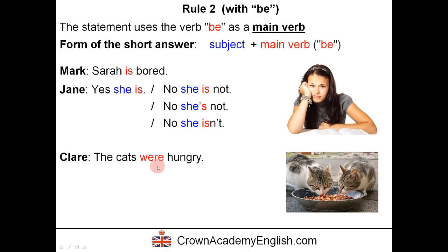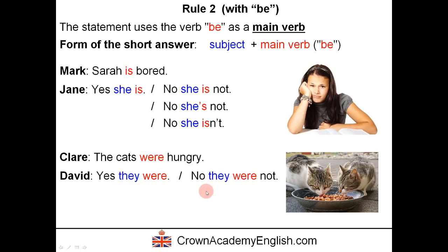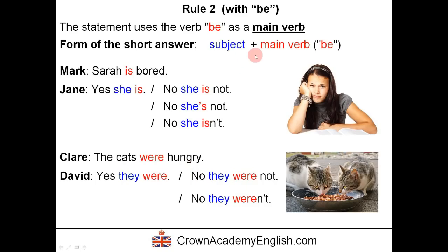Another example: The cats were hungry — here we have the verb be as a main verb in the past simple. David agrees: yes, they were. David disagrees: no, they were not, or the contracted form no, they weren't. This means yes, they were hungry, or no, they were not hungry. The form is subject followed by the main verb.